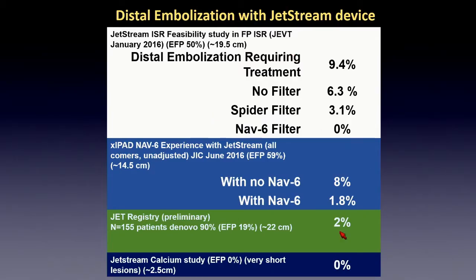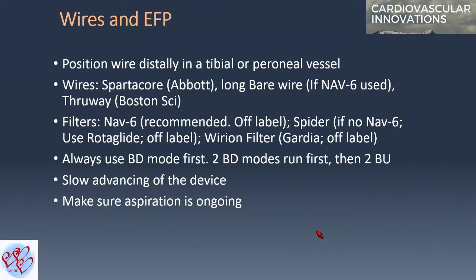Distal embolization ranged from 0% to 9.4% across different studies. The most important factor is filter use: with the NAV6 filter, distal embolization was 1.8%; without filters it was about 8%. Like every atherectomy device, JetStream does continue to embolize, making embolic filter protection an important adjunctive consideration.